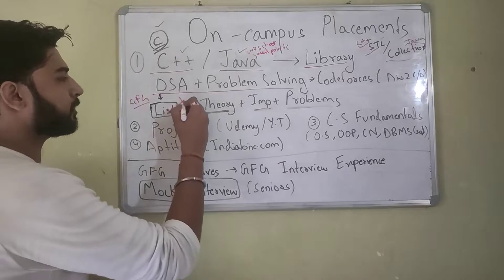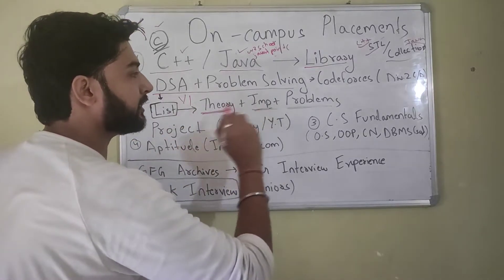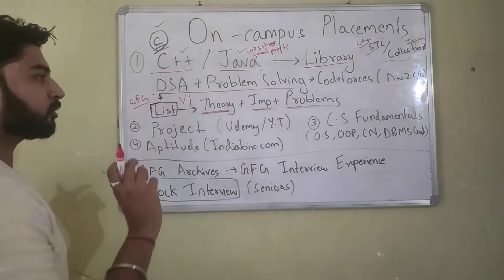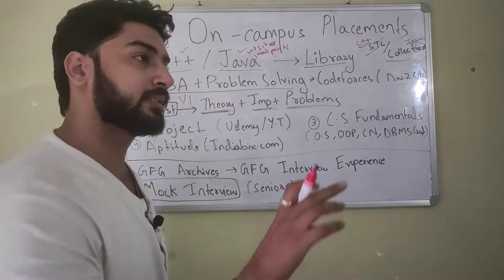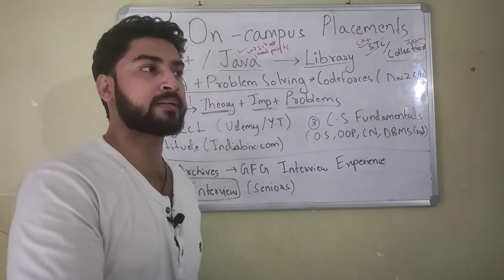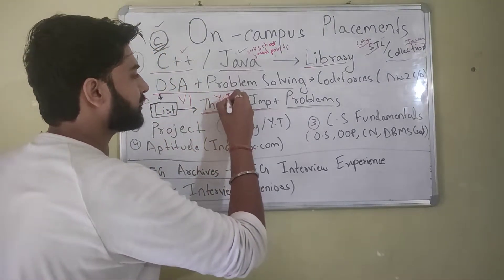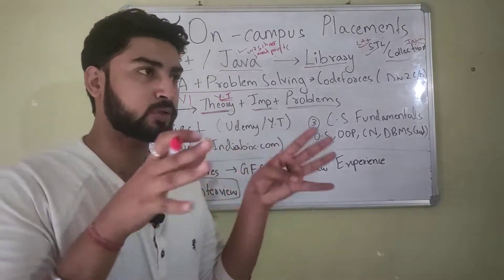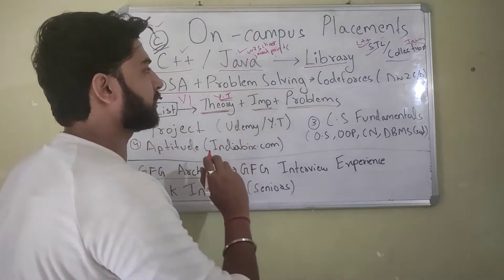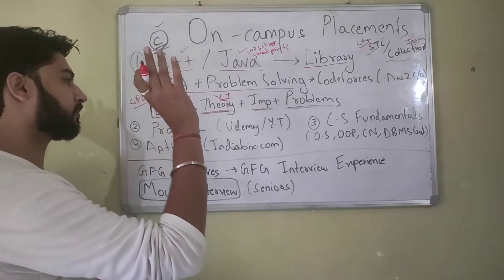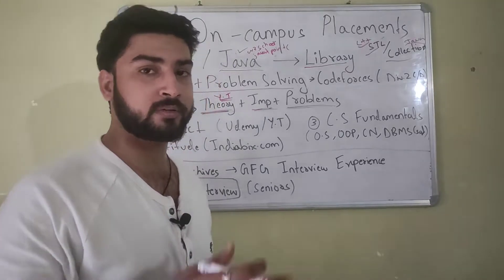Pick topics one by one from the list. For each topic — say LinkedList — you first learn the theory, then implement it in code, then solve problems. For the theory, search on YouTube, e.g. 'LinkedList working' or 'binary search tree working.' Be able to conceptualize and visualize what's happening in the data structure. Once clear on theory, implement it in code in C++ or Java. First try to implement it yourself; if not able, take hints from GeeksForGeeks — but don't copy the code, write it yourself.